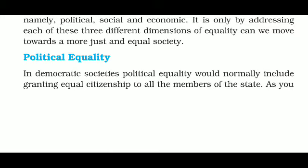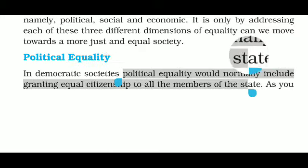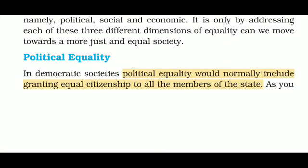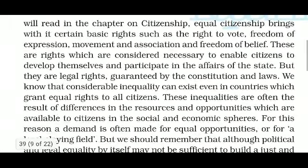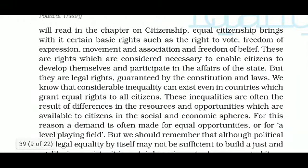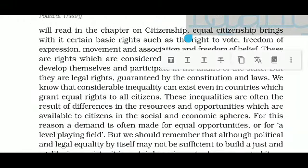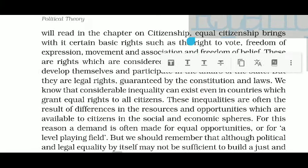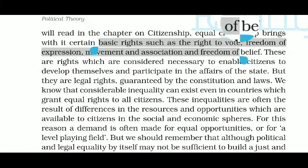In a democratic society, political equality would normally include granting equal citizenship to all members of the state. That means all state members, besides their race, religion, or caste, are given equal citizenship. As you will see in the chapter on Citizenship, equal citizenship means equal basic rights such as the right to vote, right to freedom of expression and association, which is Part 3 of the Constitution — the fundamental rights — will all be equal.